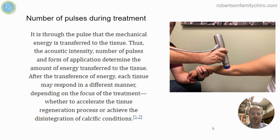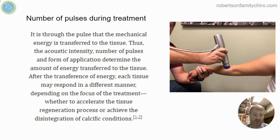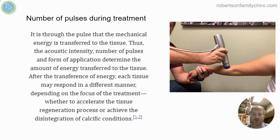The number of pulses per treatment is still variable, and it's a learning process — not just how much can an elbow handle, but how much can a young elbow versus an older elbow handle? A bigger, thicker, stronger forearm is probably going to handle more energy than an older, thin forearm. So there's a balance in figuring out how much treatment to apply, how much we can speed it up, because we want enough stimulus to cause repair, but not so much that we cause trauma.